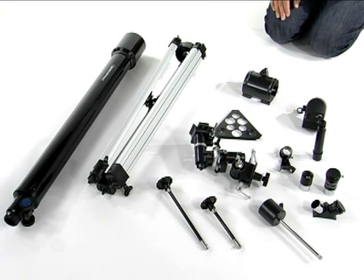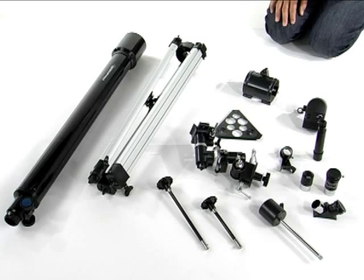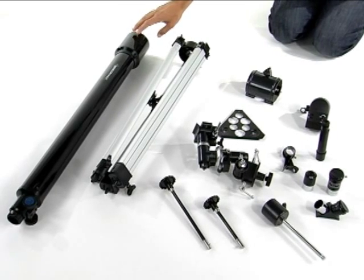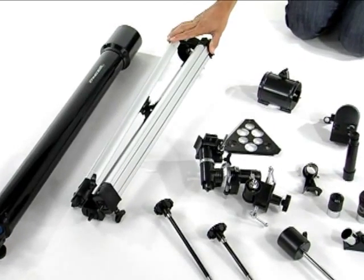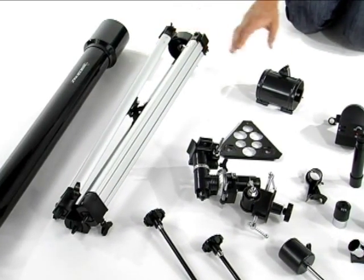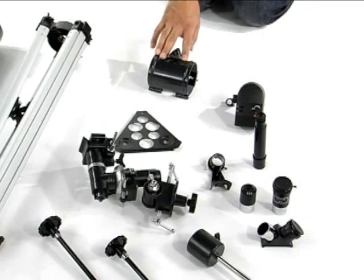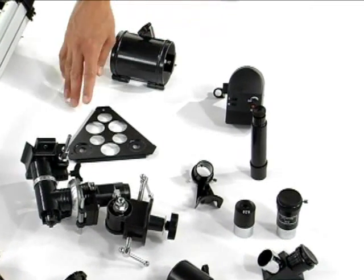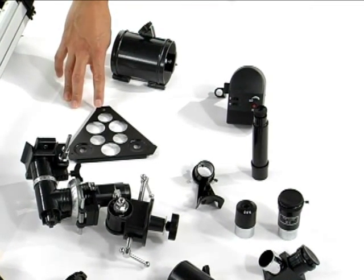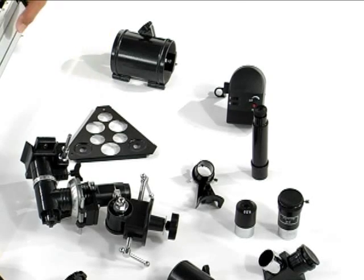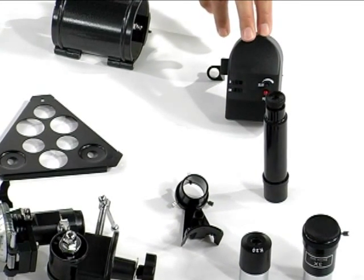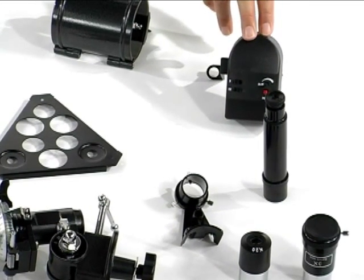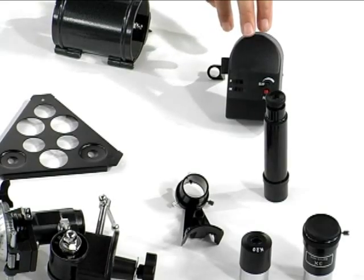Right now I'm going to go over the parts that are included inside the Aurora 70. This is the OTA optical tube assembly. This is the tripod. Right here is the OTA mounting bracket. This will be the tray for the tripod where you'll put your eyepieces at. This little device is the motor drive that will allow you to auto control once you align your telescope to the point of interest you want.